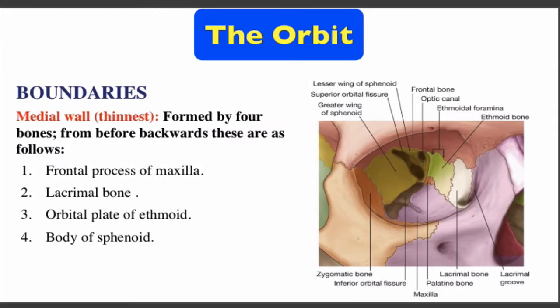Boundaries of the orbit. The medial wall is the thinnest wall, formed by four bones from before backward. Number one: frontal process of maxilla. Number two: lacrimal bone. Number three: orbital plate of the ethmoid. Number four: body of the sphenoid.